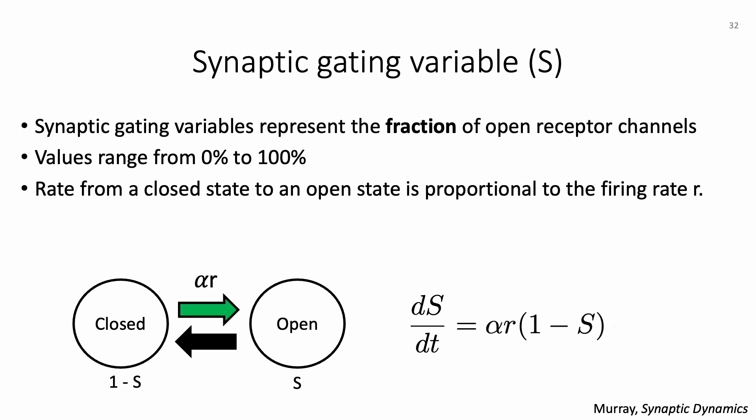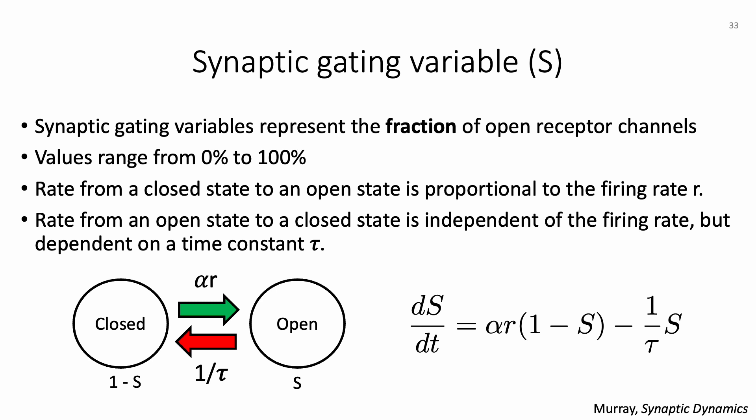The rate of change of synaptic gating variable from a closed state to an open state is proportional to the firing rate, with proportionality constant alpha, giving the first term. In the opposite direction, the rate of change from an open state to a closed state is independent of firing rate and instead dependent on the inverse of a time constant, giving the second term. Overall, this equation characterizes the dynamics of the synaptic gating variable.